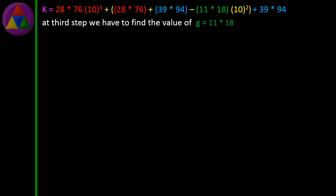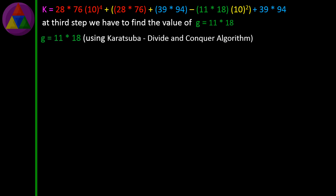At the third step we have to find the value of G, which is equal to 11 × 18. G = 11 × 18 using the Karatsuba divide and conquer algorithm.